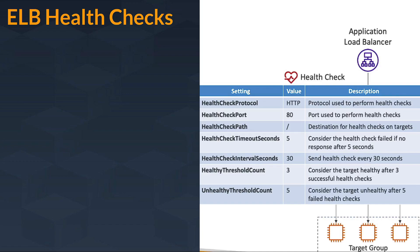Health check timeout seconds is set to a default of 5 seconds, and you can customize that timing. What it does is: the application load balancer will consider the target group unhealthy if it takes more than 5 seconds to respond. If that value is crossed, then your health check is considered a failure.